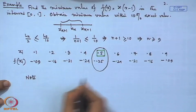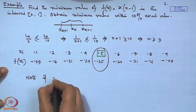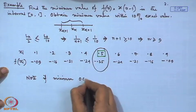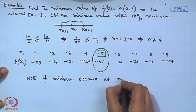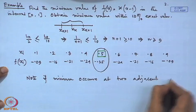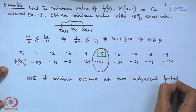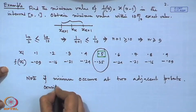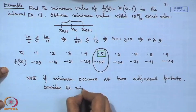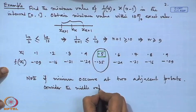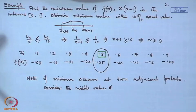One note: if the minimum value occurs at two adjacent points, we consider the middle value of these two as the minimum. In this way, through the exhaustive search technique, we can find the minimum value of any non-linear function within a given domain. Another important technique is the dichotomous search technique.